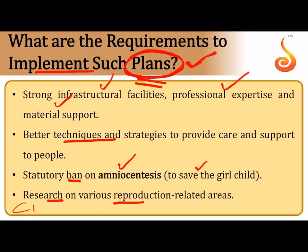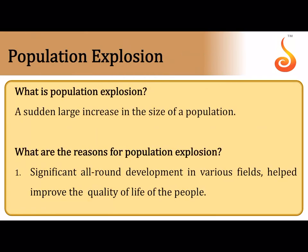The Central Drug Research Institute (CDRI) of Lucknow, through extensive research, has come up with an oral contraceptive pill for females called Saheli. Saheli is a mini pill containing a non-steroidal preparation called centchroman, and it needs to be taken only once a week — a once-a-week oral contraceptive pill specially designed for females.